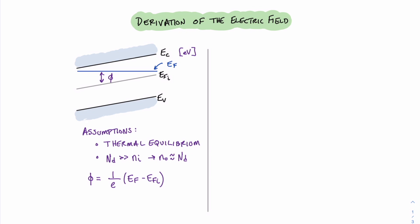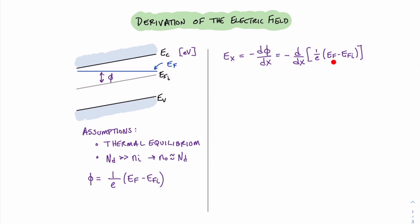We may recall that the electric field is given as minus the derivative of the electric potential. Substituting, we can find that this is minus d/dx of 1 over E times (E_F minus E_Fi). Taking a close look at this and referring back to our diagram, we can see that for the length x of this device we are showing E_F as being a constant value, whereas E_Fi is the value that is changing with respect to the distance. Therefore, we can perform this derivative and find that this is equal to plus 1 over E times d/dx of E_Fi of x.